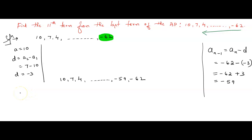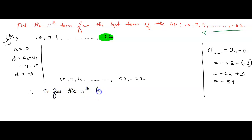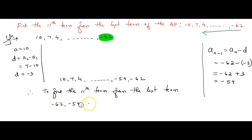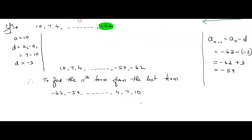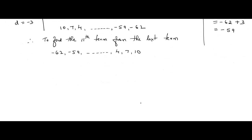Now we have to find the 11th term from the last term. Shall we write the sequence in opposite order? That is: minus 62, minus 59 and so on, ..., 4, 7, 10. This is the shortcut method I am showing you — how to solve this problem.